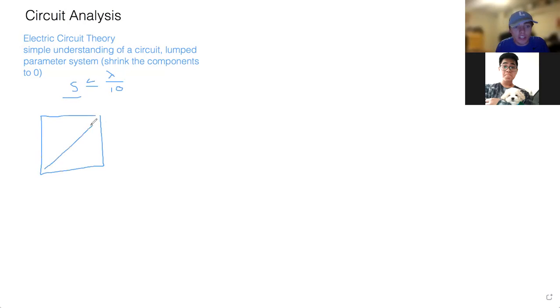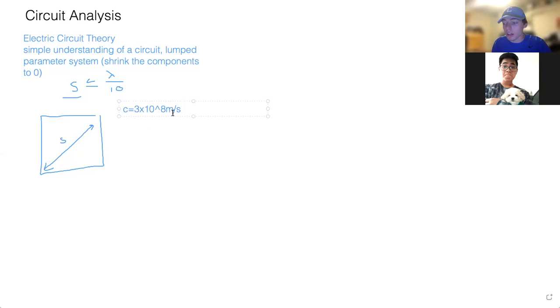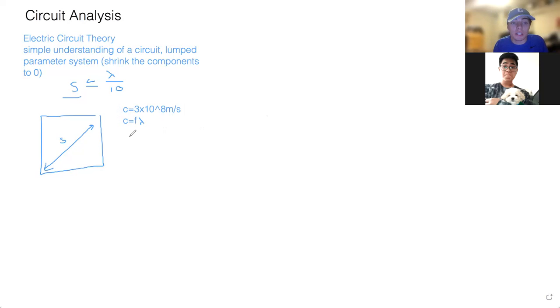That's when we can use electric circuit theory — when the size of the circuit, which refers to the diagonal, is less than or equal to the wavelength divided by 10. A lot of the time, for the wavelength we use the value for the speed of light, which is 3 times 10 to the eighth meters per second. Recall the equation C equals F times lambda, and you divide by the given frequency to find the wavelength.